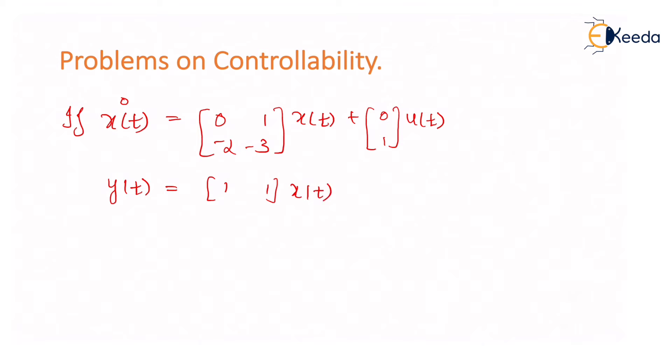The question says find or check if system is controllable or not, simple example. Now there can be only two varieties of problem: the first variety is 2 by 2 matrix and the second variety is 3 by 3 matrix. I will give you one problem for 3 by 3 as a homework problem.